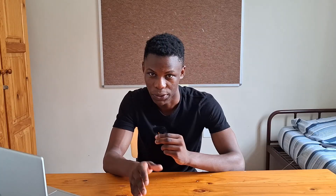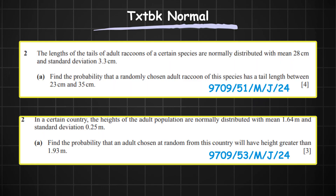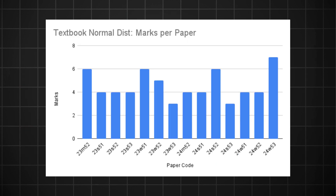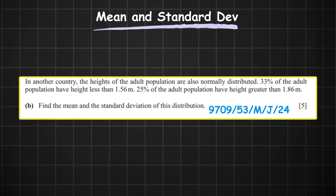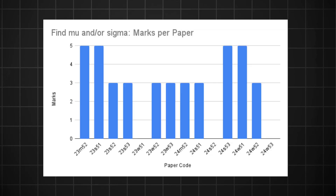Finally, we have the normal distribution. Along with discrete random variables, this is the most essential topic in all of stats one. It has three main questions. The first is the textbook question where you evaluate a probability, standardize, and then use your tables to find that probability — usually followed by a question where you're given some percentages and use the tables in reverse to find a value. This has appeared in all of the last 14 papers, so prepare for it. The second question is your find mu or sigma question — typically a five-marker if you're finding both mu and sigma, then three marks if it's only sigma. It's quite popular: 11 of the last 14 papers had it. Be wary of the five-mark question where you have to find both mu and sigma, as it can get tricky. You use your tables in reverse and end up with two equations in terms of mu and sigma, then solve them simultaneously.